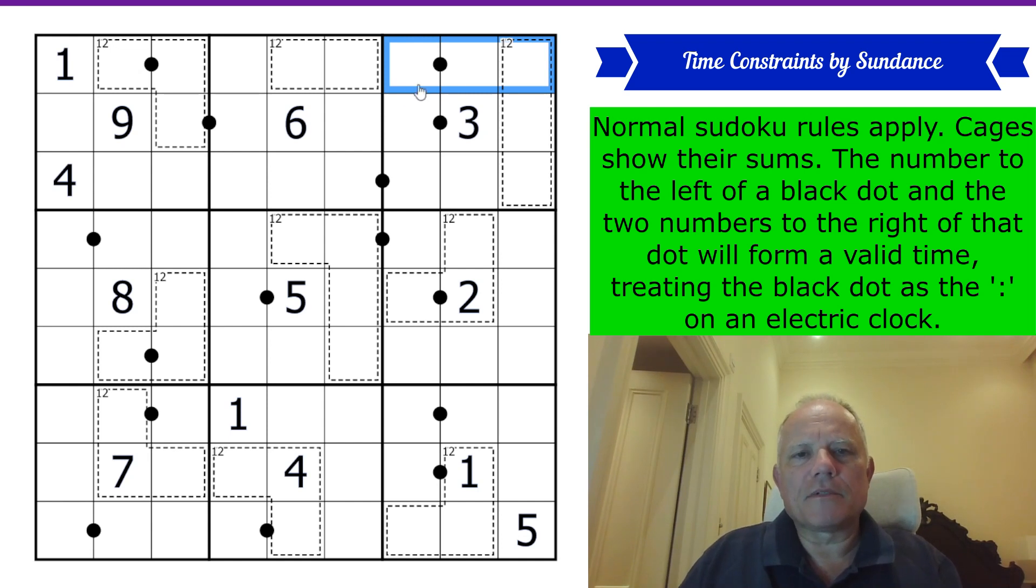Treating the black dot as the colon on an electric clock. So I suppose they could all be from anywhere between 1 and 9:59. But of course, you have to remember Sudoku rules. So there'll be no zeros or repeat digits within them. Give it a try if you fancy it. Let's get cracking.